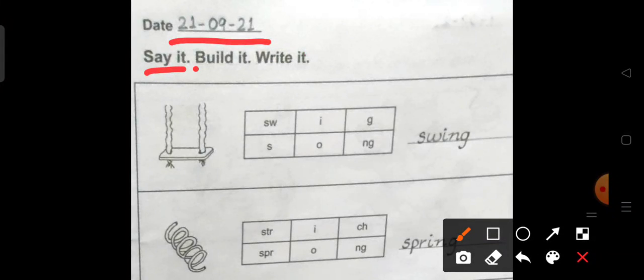Say it, build it, write it. You have to identify the given picture. Then you have to find the spelling of the word. You have to build the spelling from the grid here and then you have to write the word in the given space. So what do you see in the first picture?